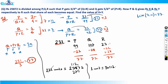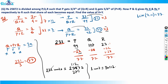P gave X and Q gave Y to R. P gave 22 units so X equals 22 units, and Q gave 28 units so Y equals 28 units. Therefore X plus Y equals 50 units. Since one unit equals 112 rupees, 50 times 112 equals 5,600. So the answer is rupees 5,600.